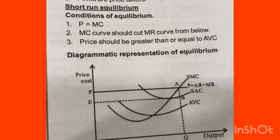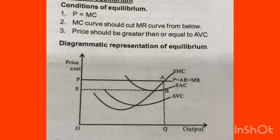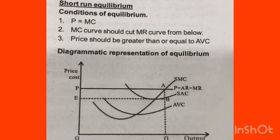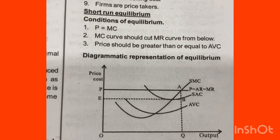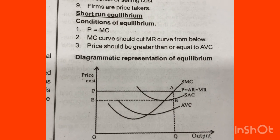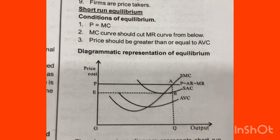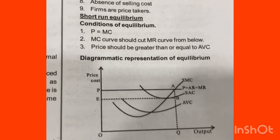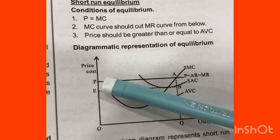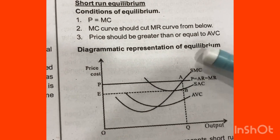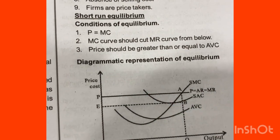Let's start with the short run. What are the profit maximization conditions? In the short run, the equilibrium conditions are the profit maximization. You can see the price equal to MC — that is, the price equal to the marginal cost. Here, price is equal to MC, the marginal cost curve.